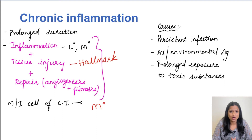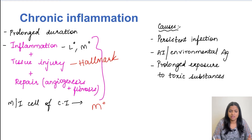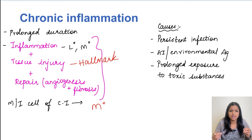What are the causes of chronic inflammation? Acute inflammation can progress on to chronic inflammation if the stimulus is persistent or difficult to eradicate. In autoimmune disorders, self-antigens cannot be removed, causing chronic inflammation. It also occurs in hypersensitivity reactions to environmental antigens, or with prolonged exposure to toxic substances like silica.